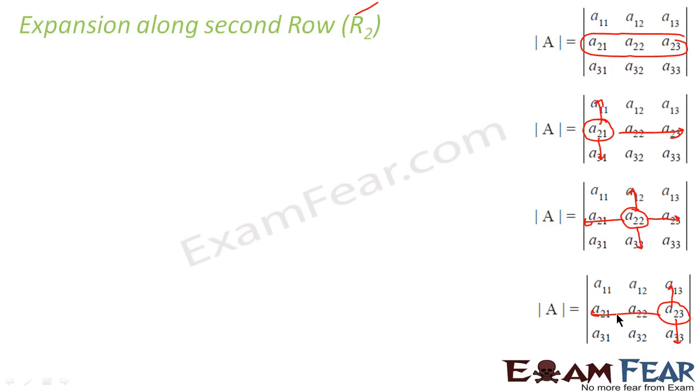So I'll add all the values in all the sets. So let me write set 1. Set 1, the formula is minus 1 to the power i plus j, aij, and this matrix. The first one is a21, that is minus 1 to the power 2 plus 1, a21, and the matrix we get is this guy: a12, a13, a32, and a33.